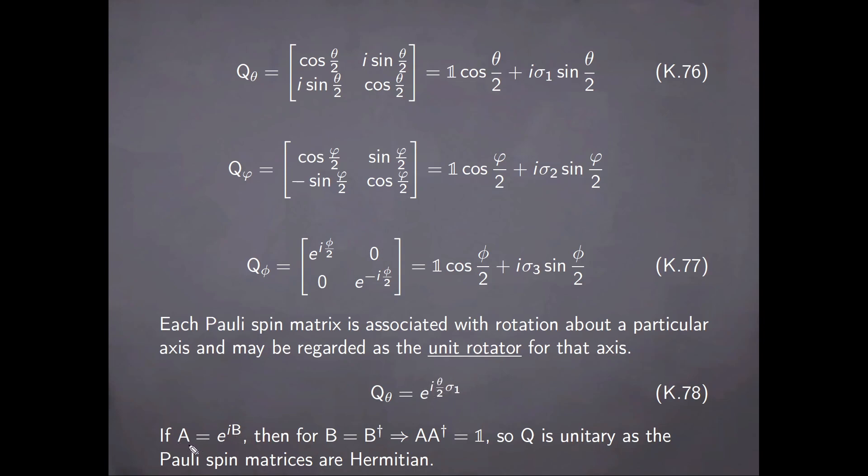Generally, if a matrix A is the exponential of a matrix B, having also the complex imaginary unit involved in the argument, then if B is self-adjoint, it follows immediately that A is unitary. In other words, Q is unitary as the Pauli spin matrices are Hermitian or self-adjoint.